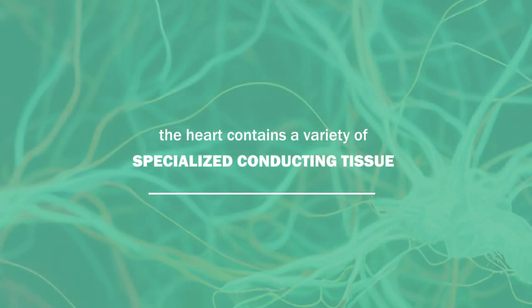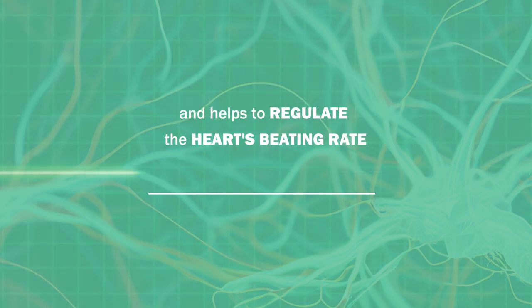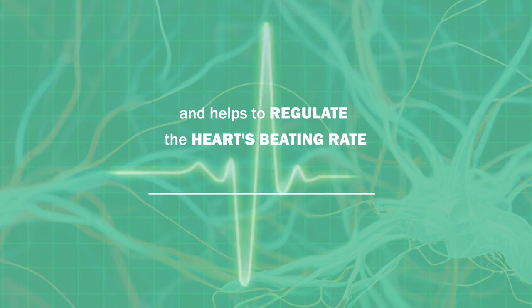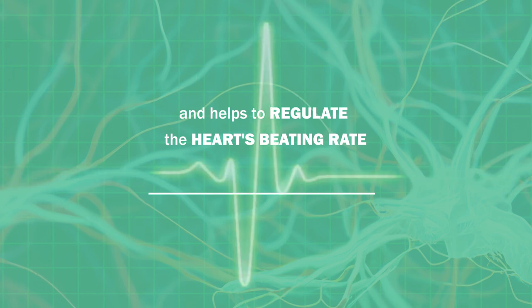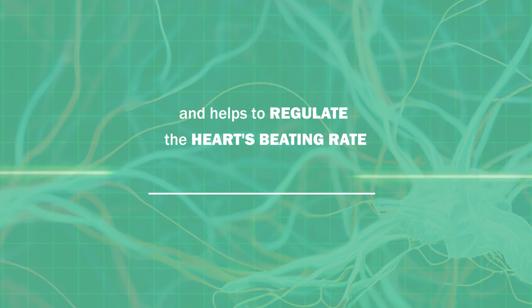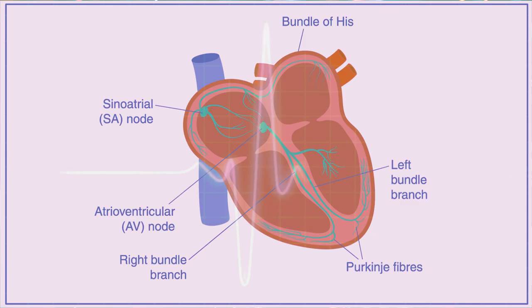Finally, the heart contains a variety of specialized conducting tissue that carries electrical signals from the heart's pacemaker, the sinoatrial node, throughout the various chambers and helps to regulate the heart's beating rate. This specialized conducting tissue includes the atrioventricular node, the bundle of His, the Purkinje fibers, and the atrioventricular bundle.